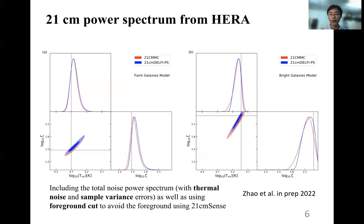Now we apply the realistic effects including the total noise power spectrum with thermal noise and sample variance errors, as well as using foreground cut to avoid the foreground. We first show the results of posterior inference from mock observations with HERA. Comparing our method with 21CMMC, the recovered true values are in large agreement. But the one-sigma credible regions estimated by our method are generally slightly smaller than those by 21CMMC.